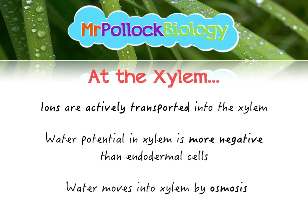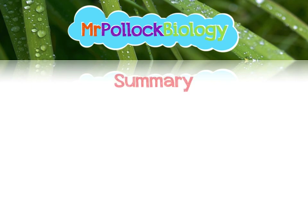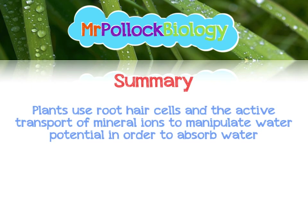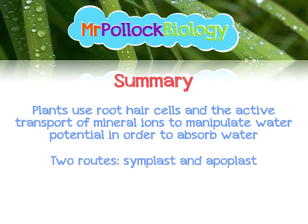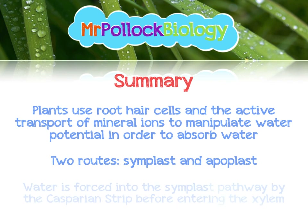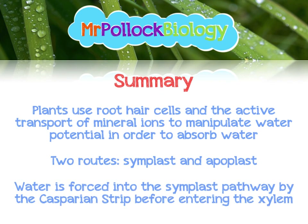To summarise: plants use root hair cells and the active transport of mineral ions to manipulate water potential in order to absorb water. There are two routes through the root — the symplast, which is through the cytoplasm, and the apoplast, which is along the cell walls. Water is then forced into the symplastic pathway by the Casparian strip before entering the xylem by the same technique as before.